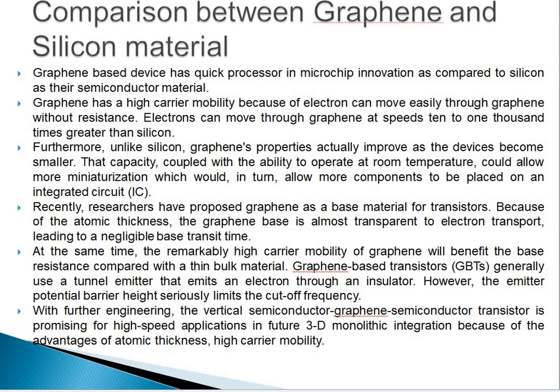Recently, researchers have proposed graphene as a base material for transistors. Because of its atomic thickness, the graphene base is almost transparent to electron transport, leading to a negligible base transit time. At the same time, the remarkably high carrier mobility of graphene benefits the base resistance compared with a thin bulk material. Graphene base transistors generally use a tunnel emitter that emits electrons through an insulator. However, the emitter potential barrier height seriously limits the cutoff frequency of the device. With further engineering, the vertical semiconductor-graphene-semiconductor transistor is promising for high-speed applications in future 3D monolithic integration, due to the advantages of atomic thickness and high carrier mobility.